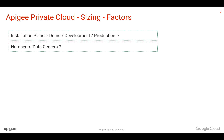The second factor is Number of Data Centers. Apigee can operate in multiple data centers in active-active mode. Whether you want one, two, or three data centers in active-active mode is going to influence the number of hardware or virtual machines and the amount of RAM and hard disk required. So you need to decide how many data centers you want.